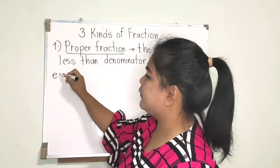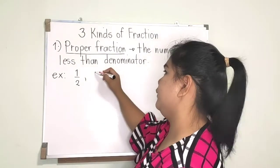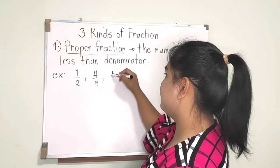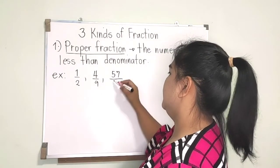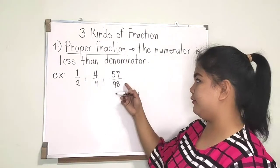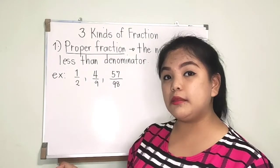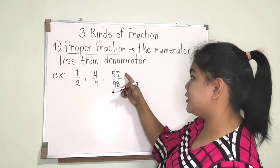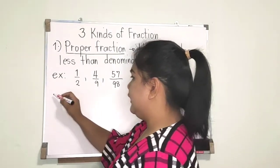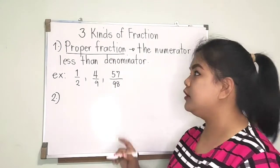An example of a proper fraction is one half. We can also have four ninths, or fifty-seven over ninety-eight. Sometimes I ask my students to say 'fifty-seven over ninety-eight.'